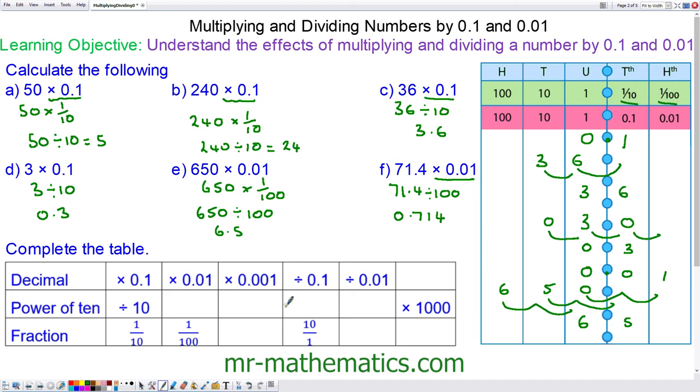So here we can begin to look at the pattern. Timesing by 0.01 is the same as dividing by 100. And you can see 0.1 divided by 10, 0.01 divided by 100. So 0.001 or one thousandth will be divided by a thousand.